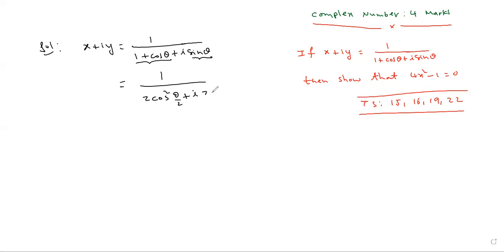What is sine theta? 2 sine theta by 2 cos theta by 2. Take 2 cos theta by 2 common: cos theta by 2 plus i sine theta by 2.